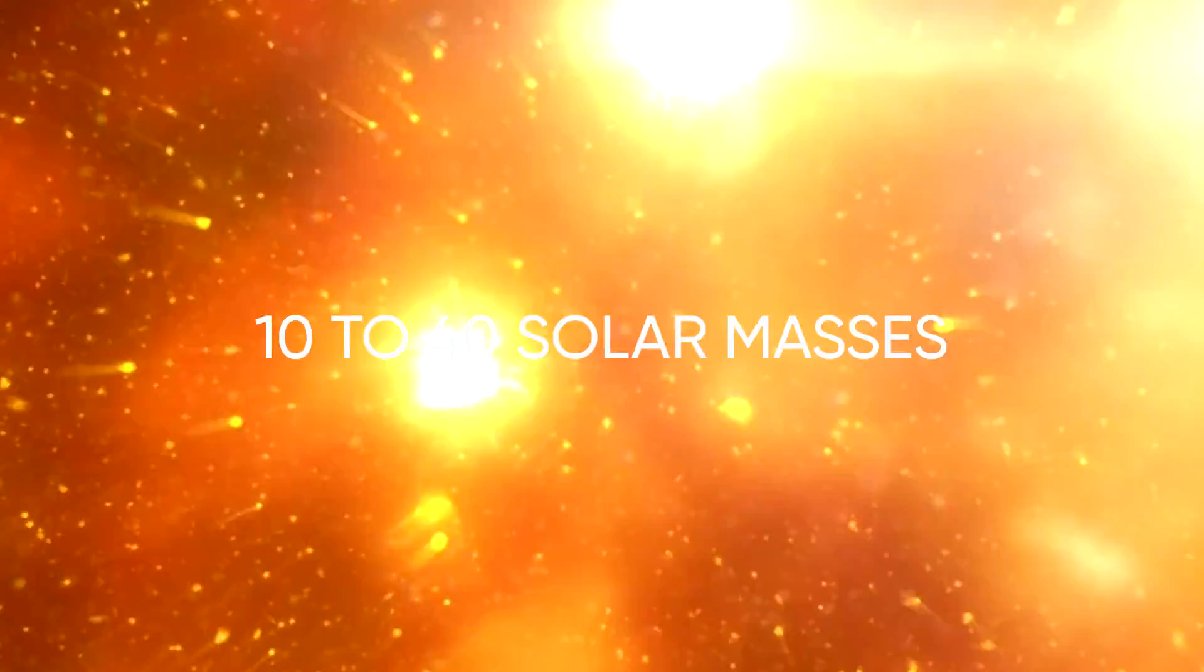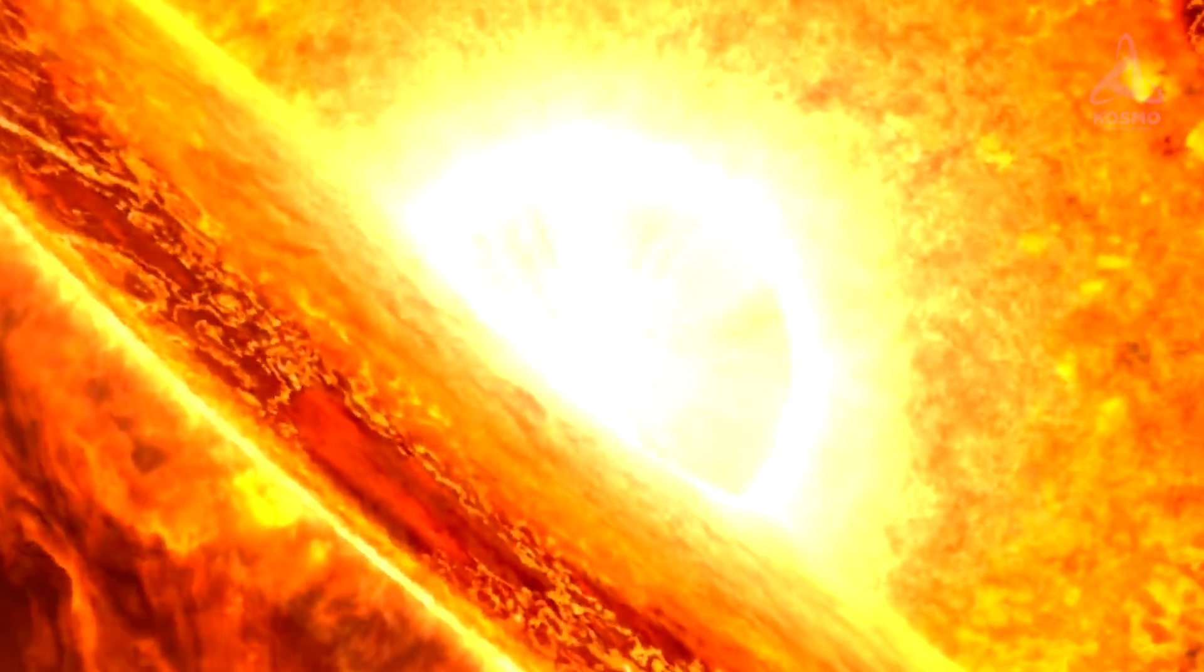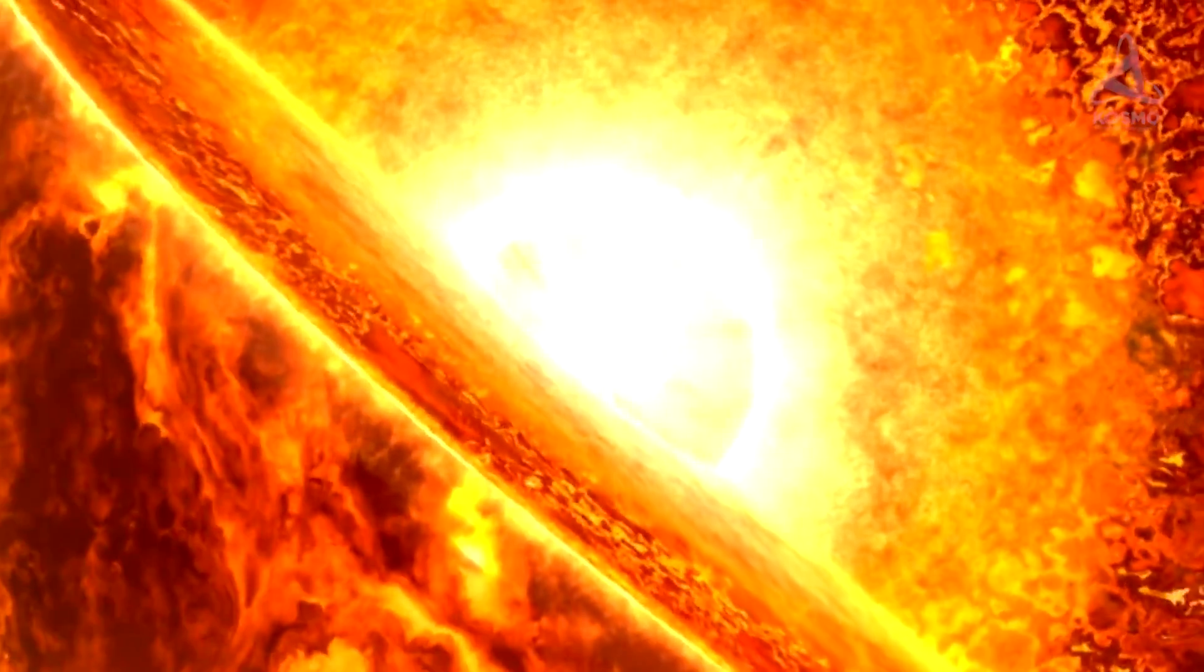According to the contemporary scientific concepts of stellar evolution, it is stars with original masses from 10 to 40 times that of the sun that qualify to become red supergiants at a later stage of their existence. Thermonuclear reactions in their interior rapidly burn out all hydrogen, thus turning it into helium.